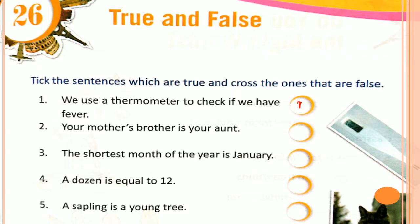Number 2: Your mother's brother is your aunt. It is FALSE. Your mother's brother is not your aunt — in English we call him your uncle, not aunt. That is why it is a false sentence.